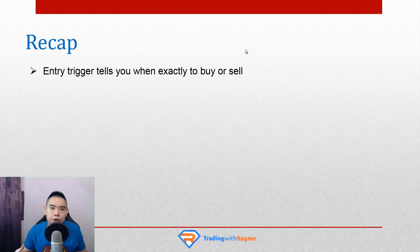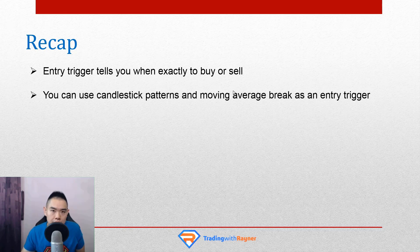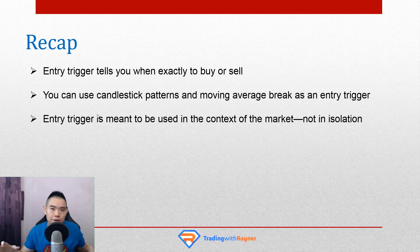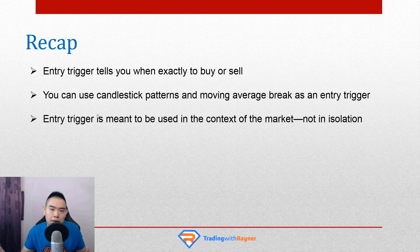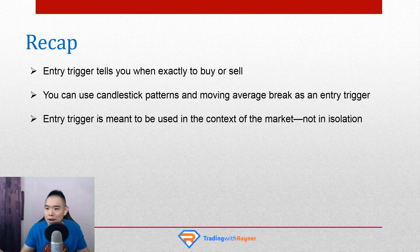Let's do a quick recap. An entry trigger tells you when exactly to buy or sell. I shared a couple of entry trigger techniques: candlestick patterns such as hammer, shooting star, and engulfing pattern to time your entry; and the moving average break technique, using the five-period moving average to help time your entry. One last thing to note: entry triggers are meant to be used within the context of the market — market structure, area of value — not simply hit the buy button when you spot a moving average break. This brings us to the next point: when exactly do you exit the trade? What if the market moves against you — where do you cut your loss? What if the market moves in your favor — where do you take profits? All this and more in the next section.